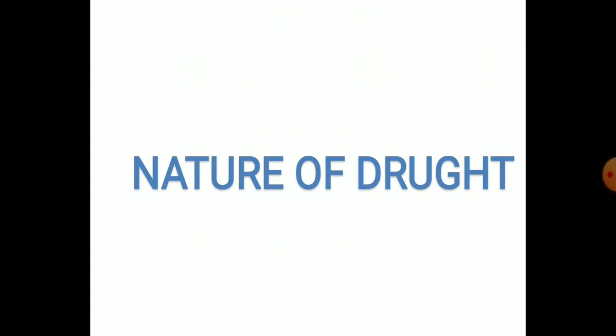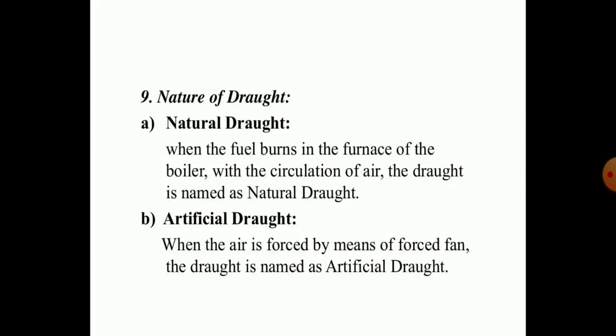By the generation of steam into the boilers, the draughts play a vital role and according to their nature, the draughts are mainly of two types: natural draughts and artificial draughts. When the fuel burns into the furnace of the boiler with the circulation of air, such draughts are named as natural draughts, while when the air is forced by means of a fan, the draught is called artificial draught.